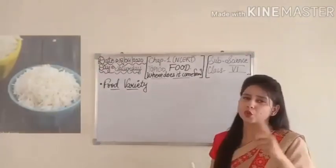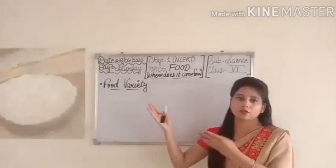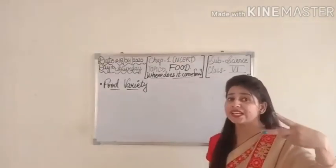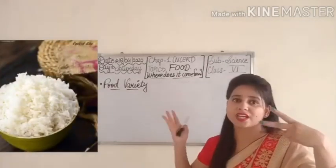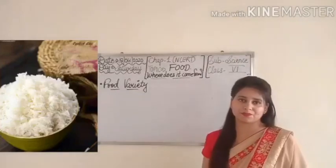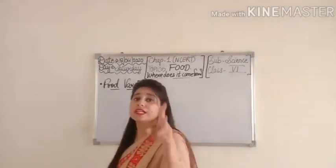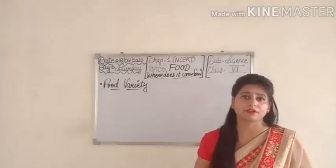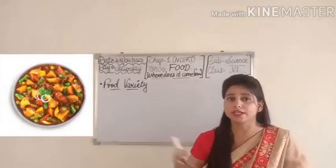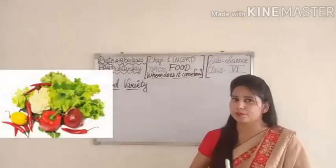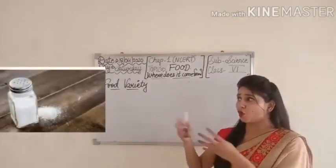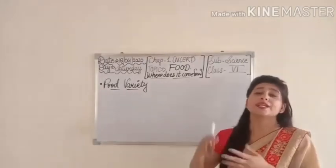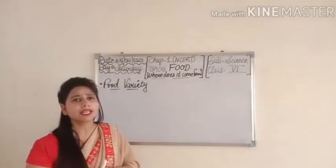Let's take one example. Think about rice cooked at home. We take raw rice and boil it in water — just two ingredients are needed to prepare a dish of boiled rice. On the other hand, some food items need many ingredients. For a vegetable curry, we need vegetables, salt, vegetable oil, spices, and so on.